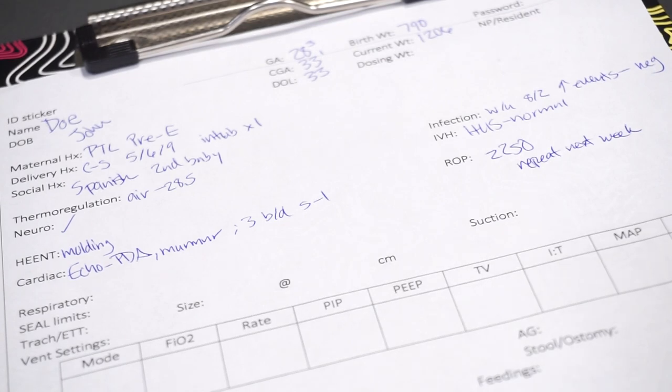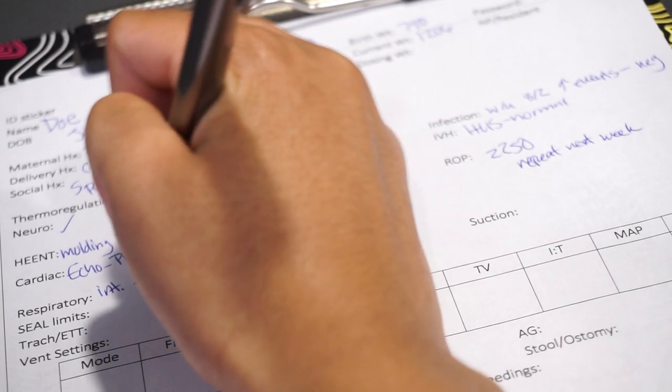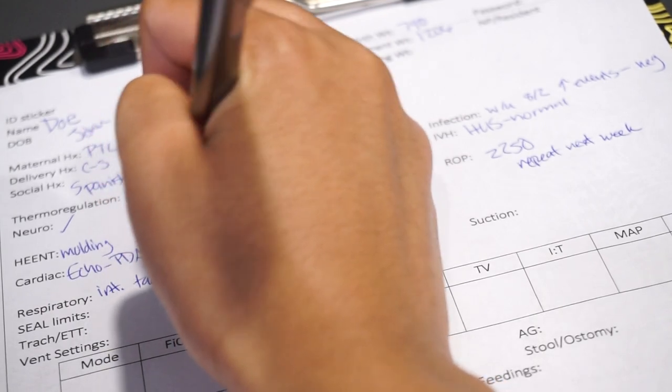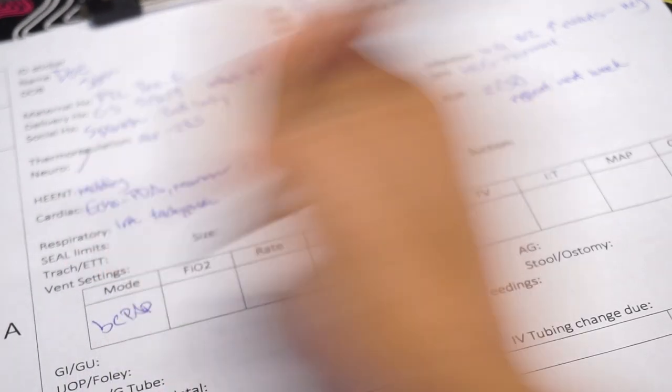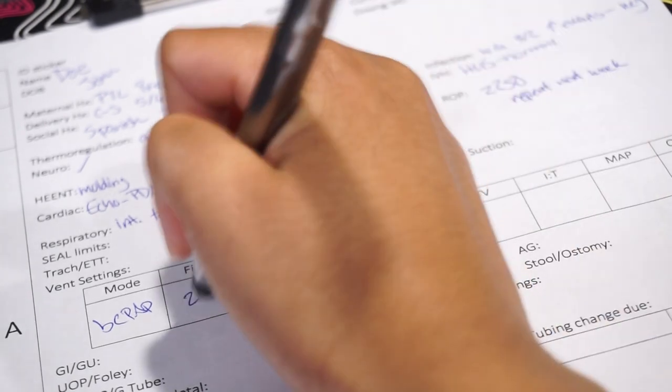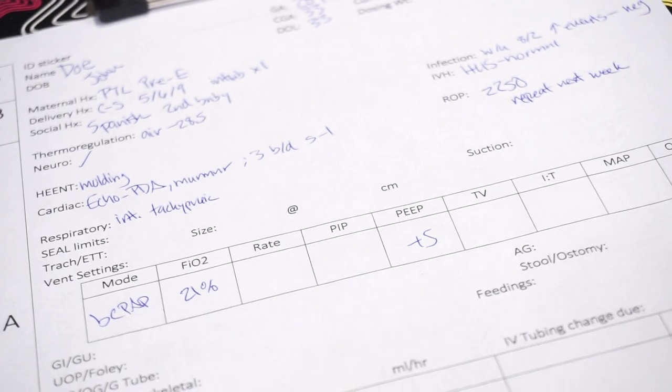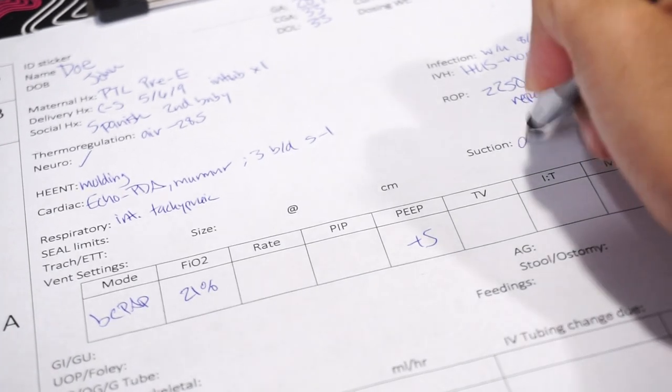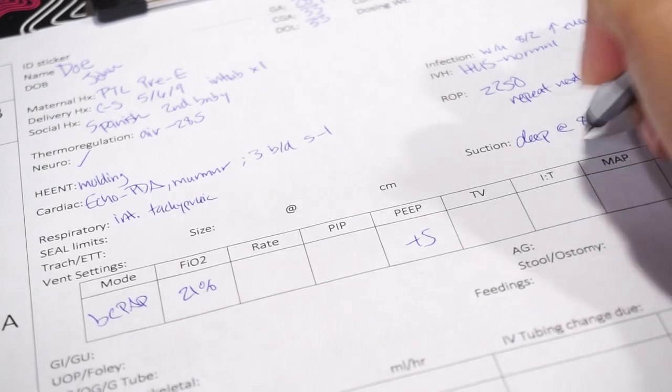Respiratory-wise, he can be intermittently tachypneic. And he is on bubbles right now, plus 5. And he has been at 21% throughout the shift. We did deep suction him at about 8 o'clock. And we got a moderate amount out.